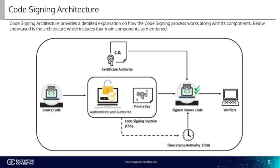Timestamp authority: an optional but important component in code signing architecture is timestamp authority. Timestamping preserves the source time when the code was signed and allows software to be accepted by the OS and other client device platforms even after the expiration of the certificate.